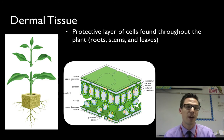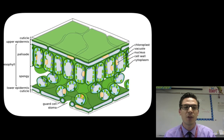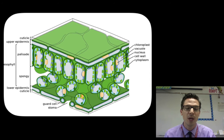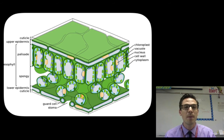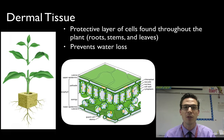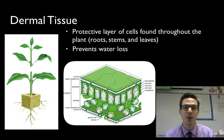Dermal tissue is found throughout the plant — in the roots, the stems, and the leaves — and it's a layer of cells working together to protect the inside of the plant. Here's a cross-section of a leaf that has a single layer of cells known as the epidermis, which is a type of dermal tissue protecting the inside from the outside environment. This is where we find stomata surrounded by two guard cells. The dermal tissue may also form an outer layer called the cuticle, which helps prevent water loss.